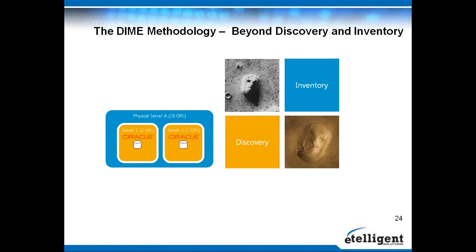The next phase is Inventory. After you know something is out there, you need more data. We have security credentials entered into IQ Sonar and we connect to that system — similar to sending an explorer to Mars for a closer look. Just as the explorer revealed the face on Mars was actually a mound, IQ Sonar inventory can reveal that the two servers in our example actually have Oracle installed on them, and those two servers are not physical servers — they are VMs. Those two VMs live on one physical server that has 20 Oracle processor licenses versus two single servers each with a single Oracle processor license.